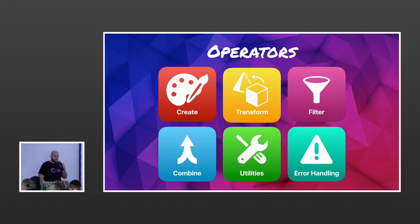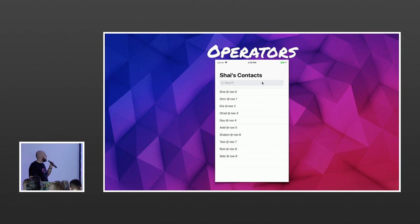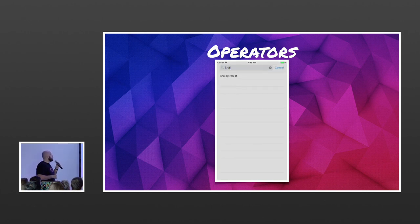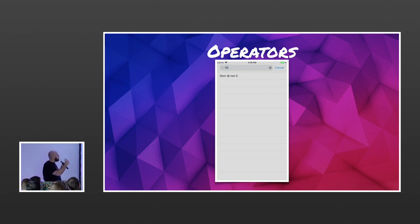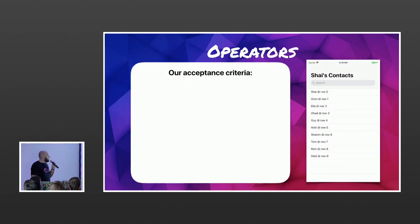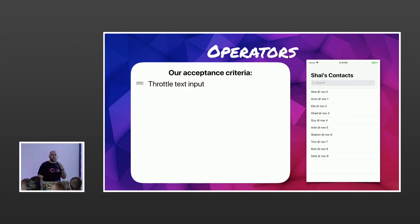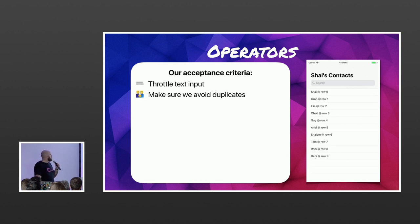Let's look at a practical example — a contacts app where typing anything goes to the back end and returns matching names, filtering based on what I type. The acceptance criteria: we want to throttle text input so if the user types 'abcd' we don't send four network requests, only the last one. We also want to avoid duplicates — if the user types 'abc', deletes a letter and retypes it, we only send one request.